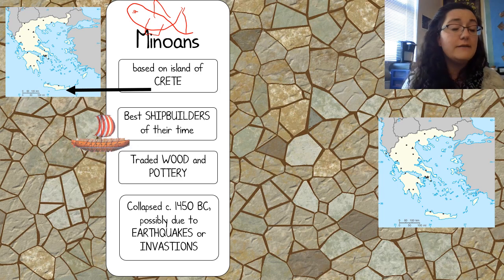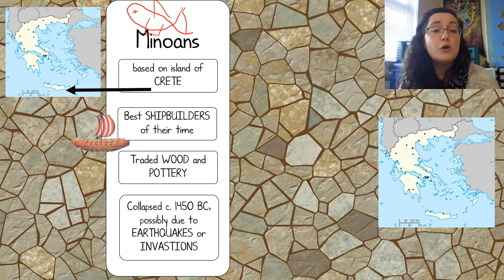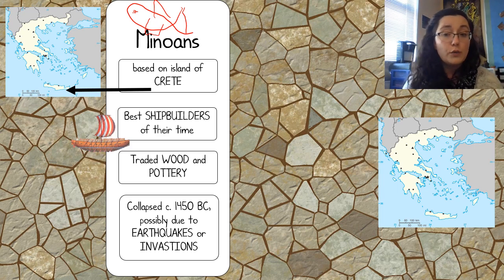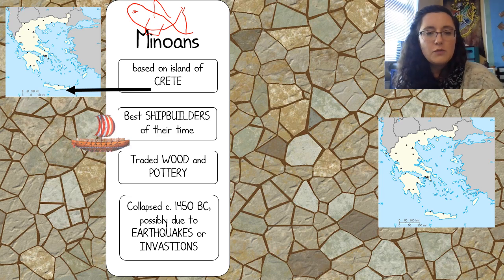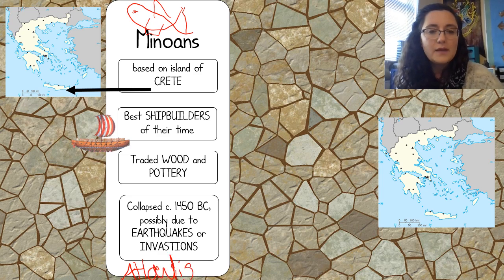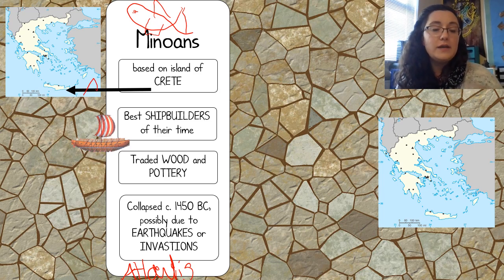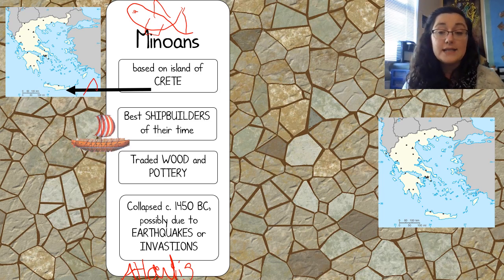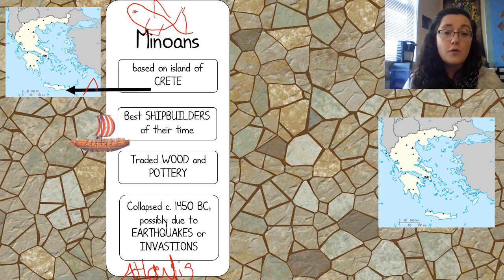The Minoans collapsed around 1450 BC, most likely because of a major earthquake, but also possibly because of invasions. In fact, the legend of Atlantis is most likely based on the Minoan civilization. Write the word 'Atlantis.' There was a huge volcano nearby that set off a tidal wave that we know damaged the Minoans, and that may have been one of the reasons they eventually became less powerful.